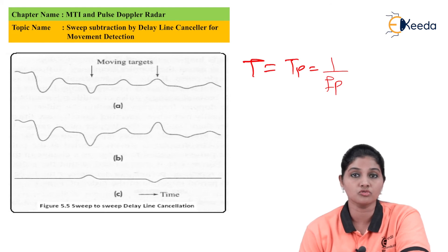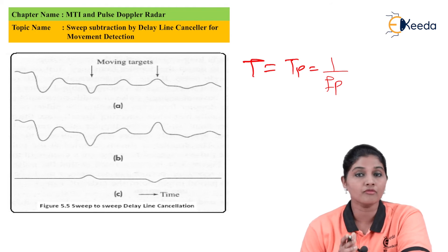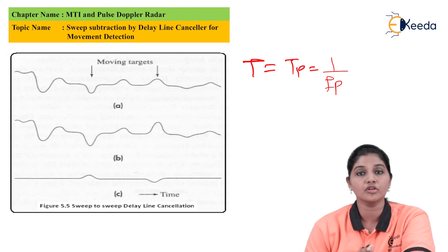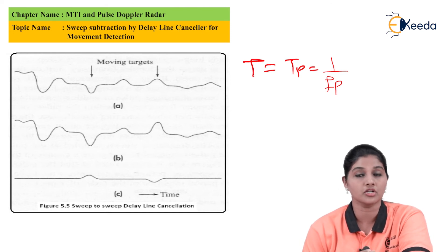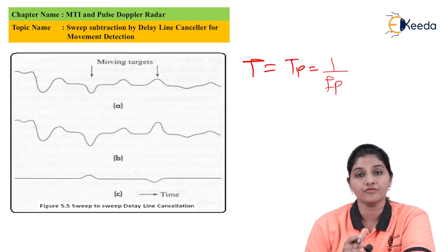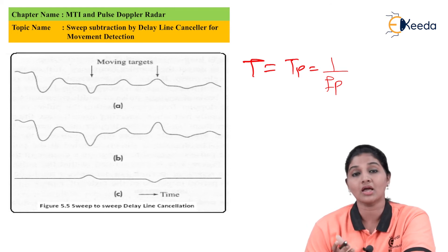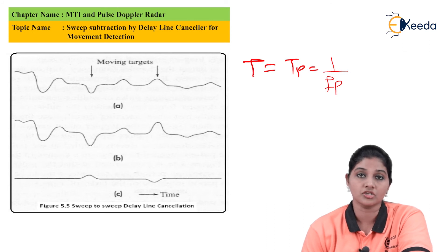Delay line cancellers are basically used to delay the signals from the successive sweep. In case of MTI radar, the bipolar video signal is converted into the unipolar video signal, and finally the unipolar video signal is converted into an analog signal by using a digital to analog converter. The signal is further processed and given to the PPI indicator — that is, the plan position indicator — for display purposes.